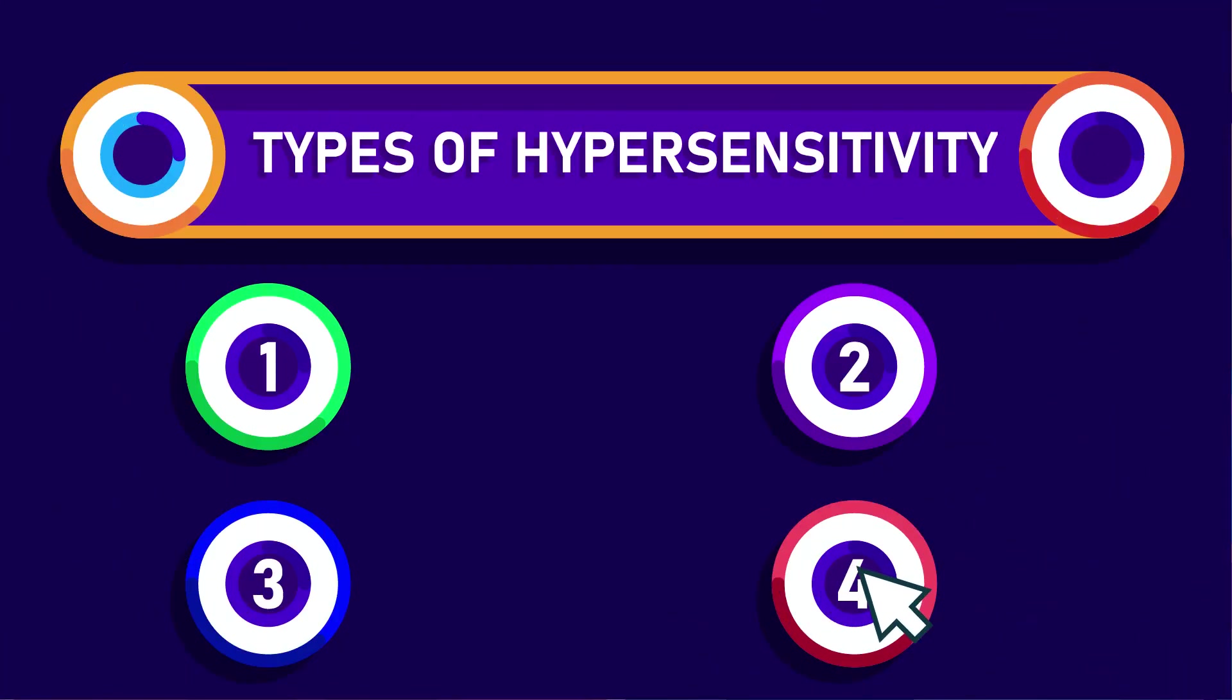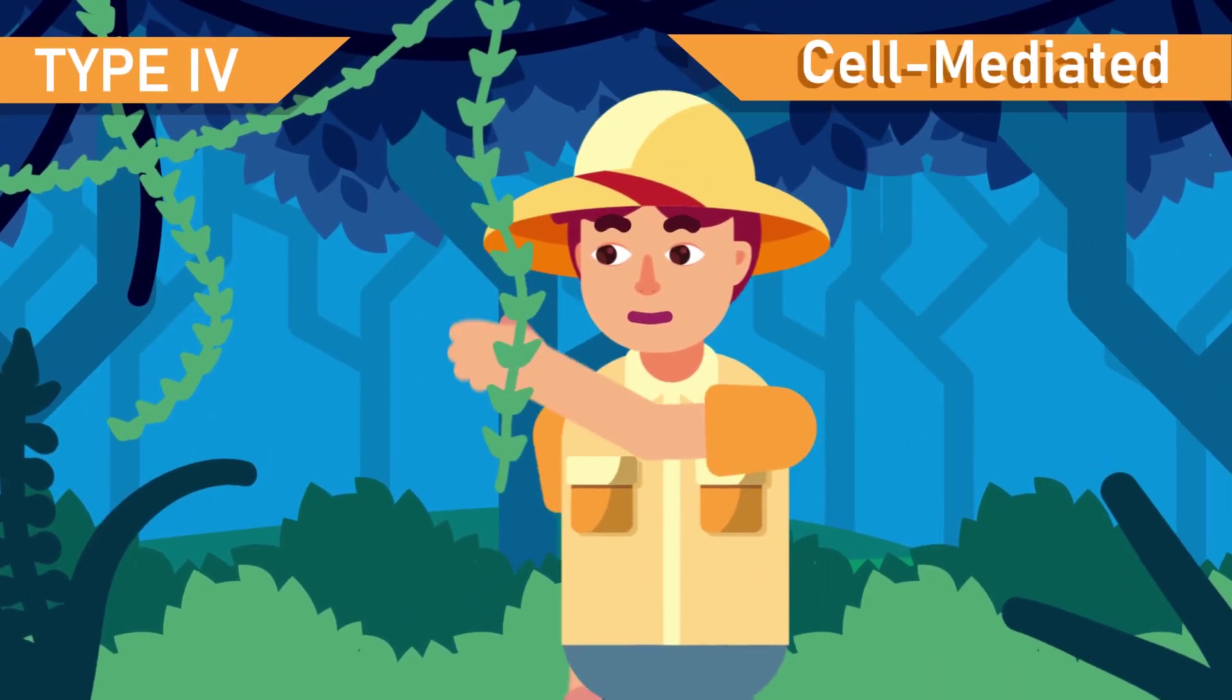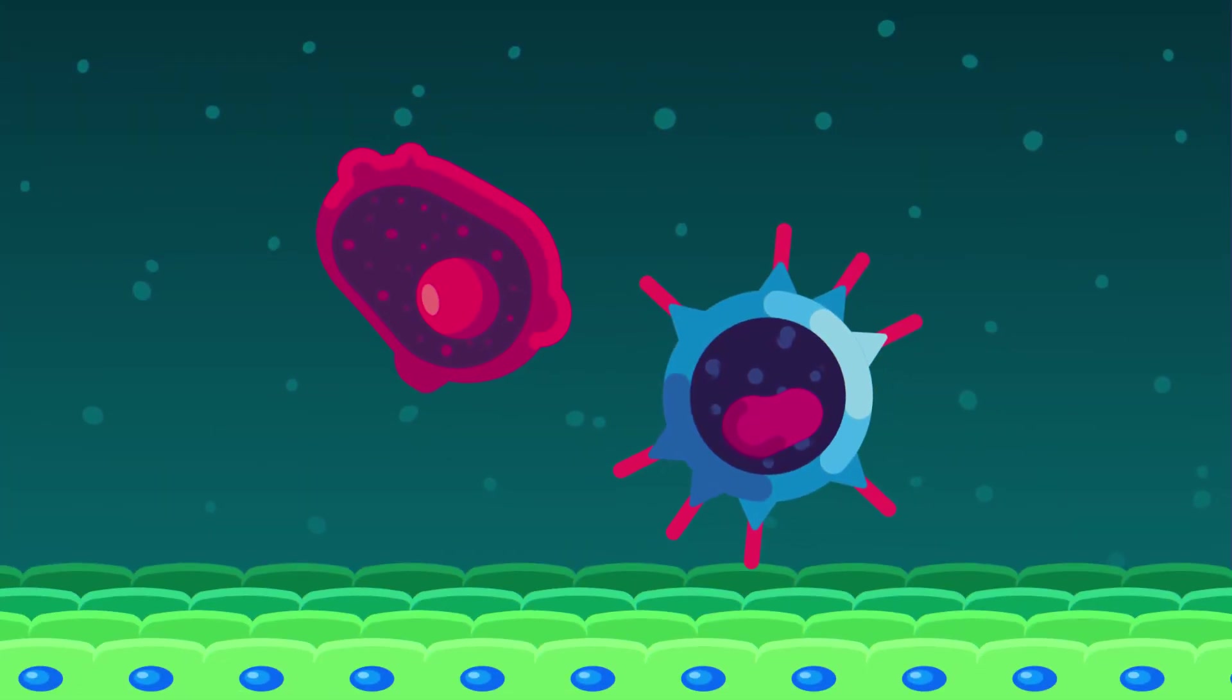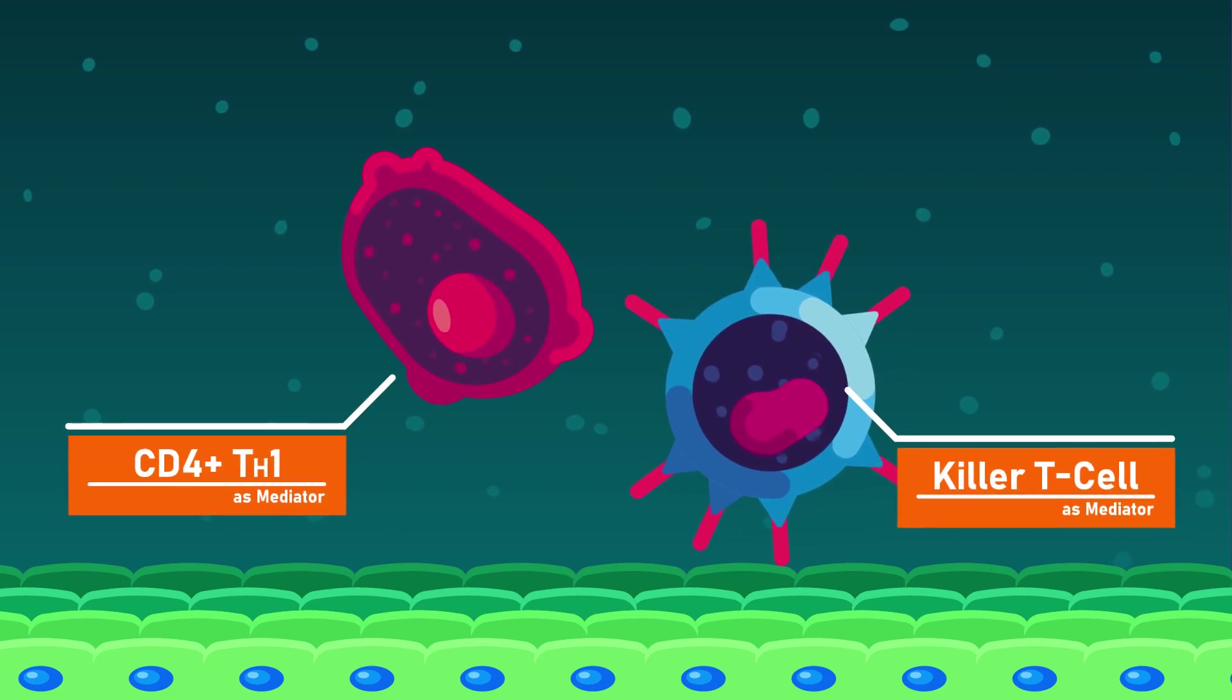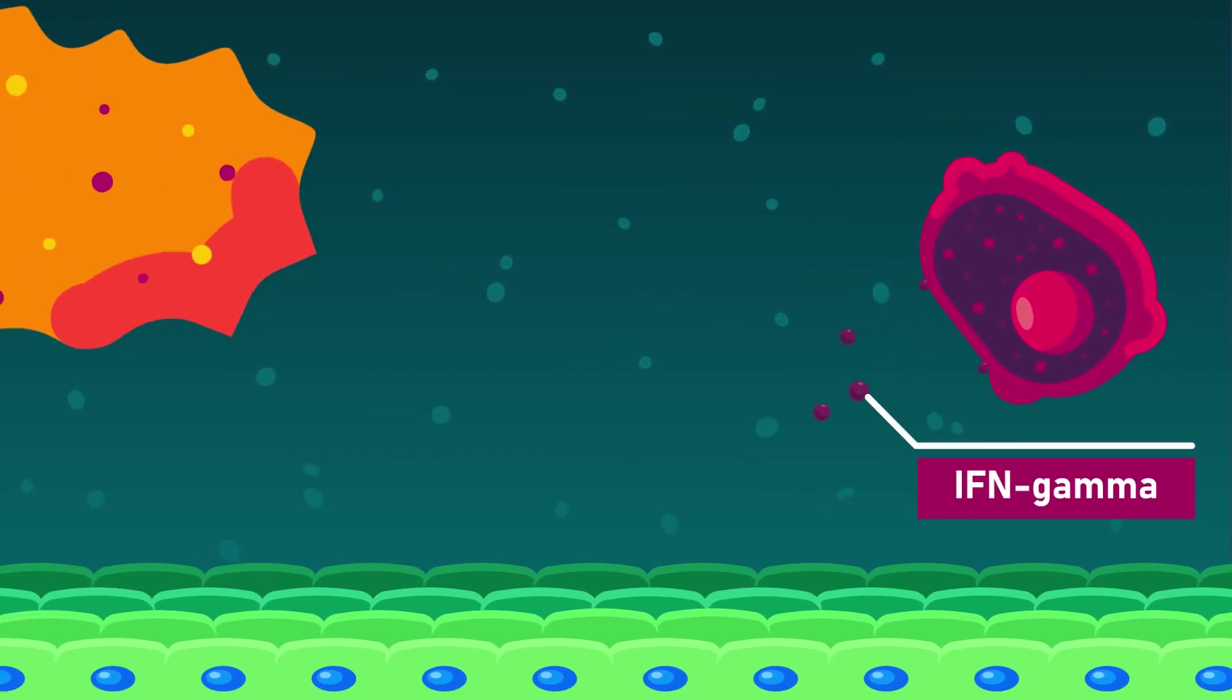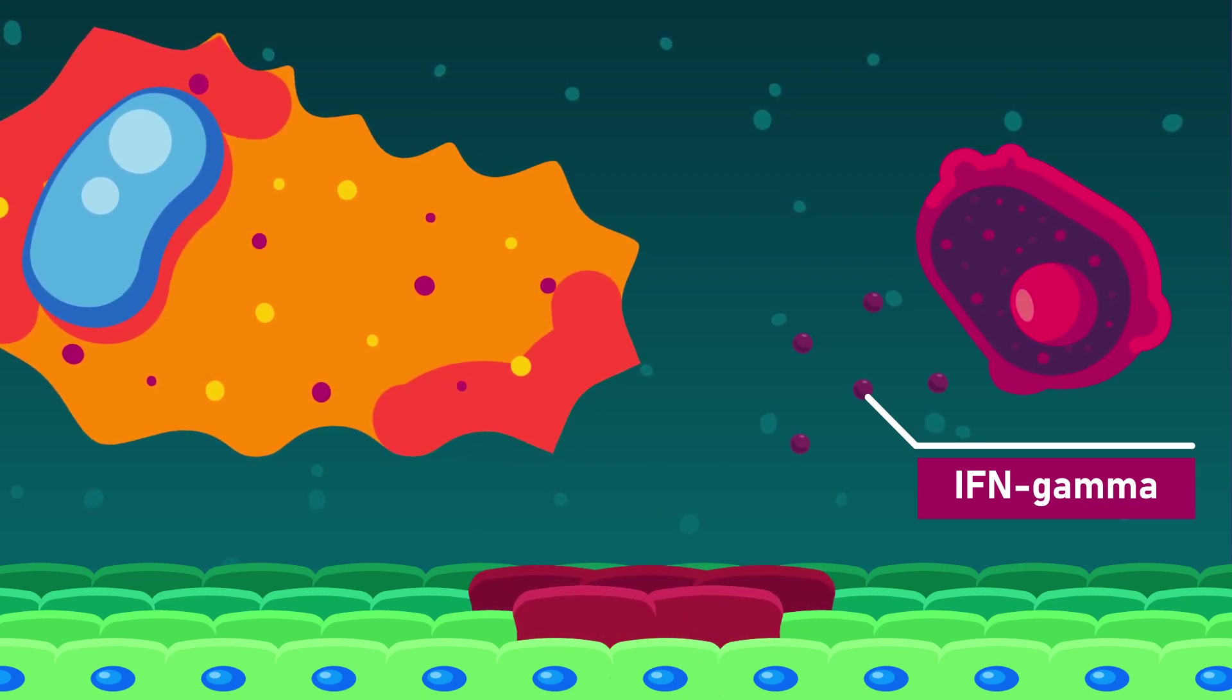Type 4 or delayed cell-mediated hypersensitivity. It manifests within 48 to 72 hours, or is delayed. These type 4 hypersensitivity reactions are elicited by CD4+ Th1 cells and CD8+ cells.